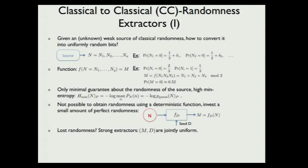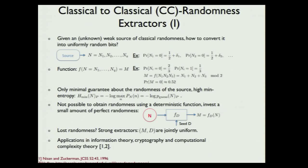There exists the idea of strong extractors: they have the property that the seed can be reused, so even after the seed is used, it's still uniform. Classical randomness extractors have many applications in information theory, cryptography, computational complexity theory, and so on.